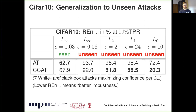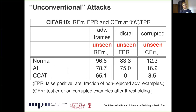These results are confirmed on CIFAR-10. Our model performs slightly worse on the seen adversarial examples and on large L-infinity adversarial examples. However, on L2, L1, and L0 adversarial examples, we significantly outperform adversarial training — for L2, we reduce the robust test error from 100% to nearly 50%. Confidence calibrated adversarial training also generalizes better to unconventional threat models. For example, in the left column we consider adversarial frames, where we outperform the baseline.